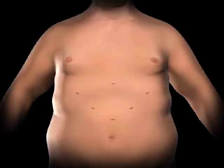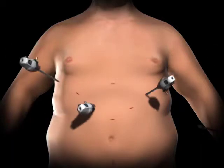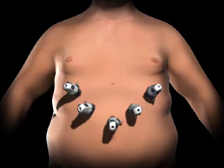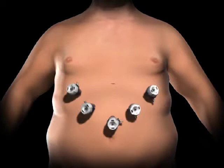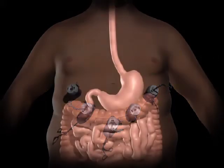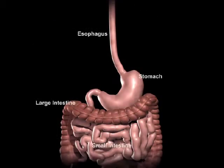To gain access to the abdominal cavity, small incisions are created on the abdomen. Trocars, which serve as passageways for the surgical instruments, are placed into the incisions. The surgeon examines the abdominal cavity using a laparoscope or video camera.